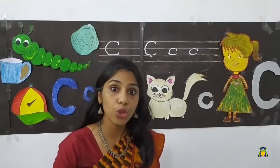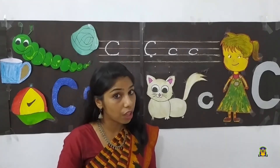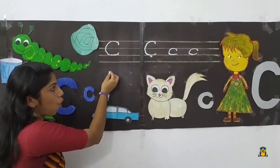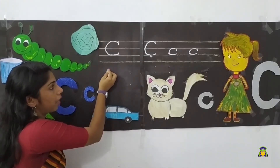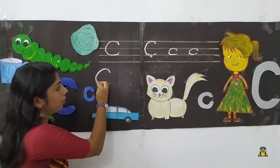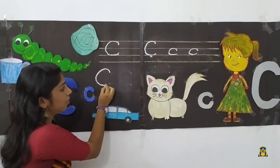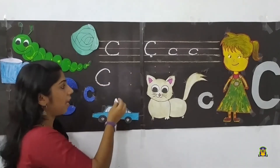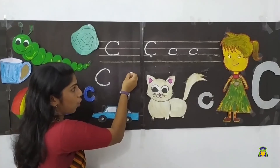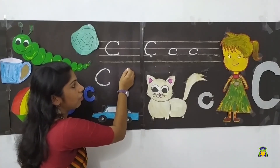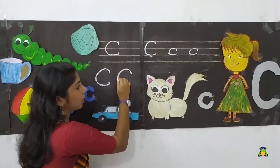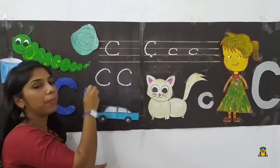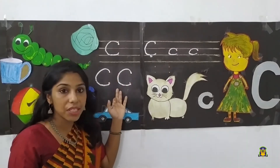Next, ma'am will teach you how to write C without lines. Put a dot at the top. Make a right open curve. Go up a bit. Once again, put a dot, make a right open curve, and go up a bit. Capital C.